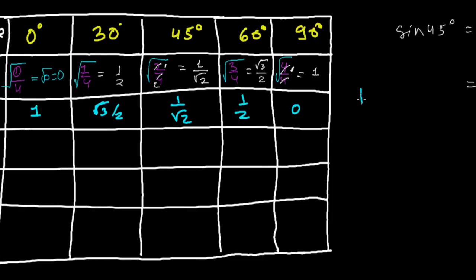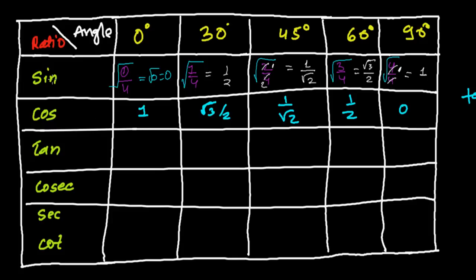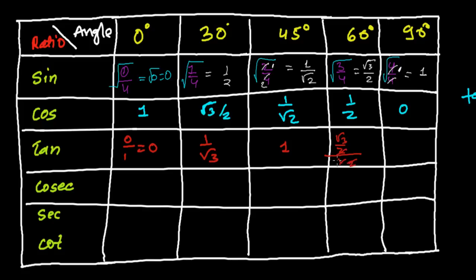Tangent is the ratio of sine over cosine, so the numerator is the sine value and the denominator is the cosine value. Tan 0° = 0/1 = 0. Tan 30° = (1/2) / (√3/2) = 1/√3. Tan 45° = (1/√2) / (1/√2) = 1, since numerator and denominator are the same. Tan 60° = (√3/2) / (1/2) = √3, since the 2s cancel. Now for 90°, you get 1 over 0.